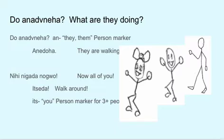Doandaneha. Nigad. Nigad. Heahniyawi — What are all these people doing? Anedoha — They are walking around. Nihihnogui. Nigad. Nihihnogui. Itdeda — You all walk around. Its is the sound for three or more people.